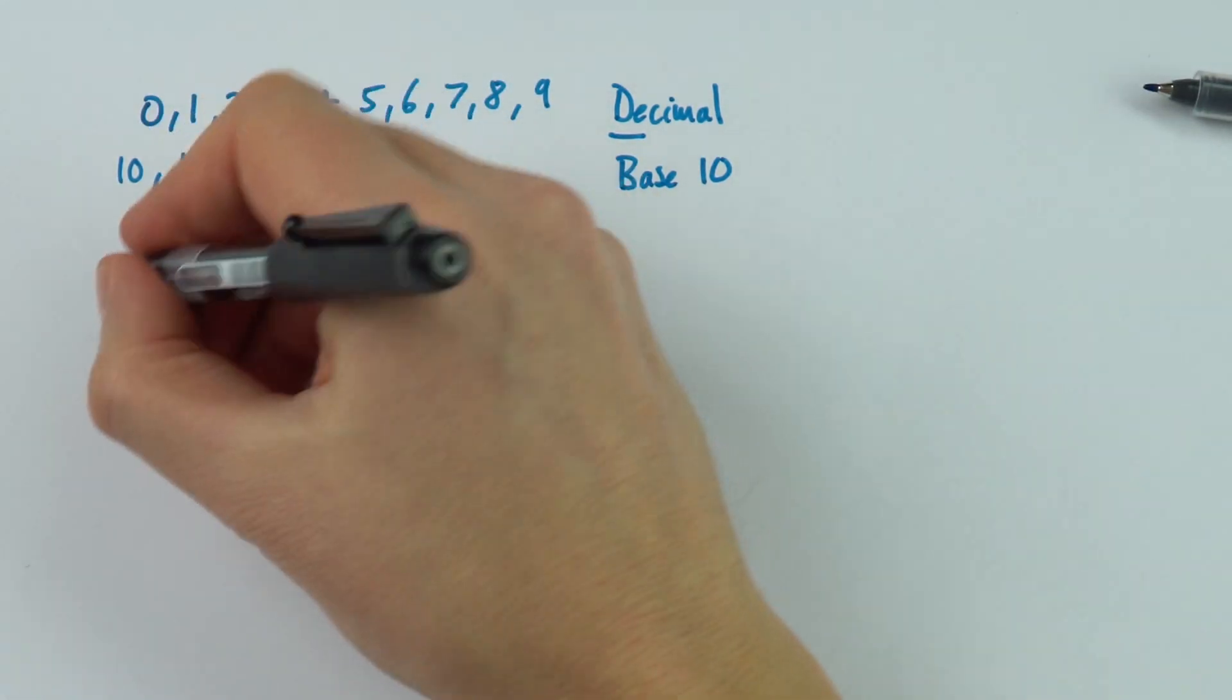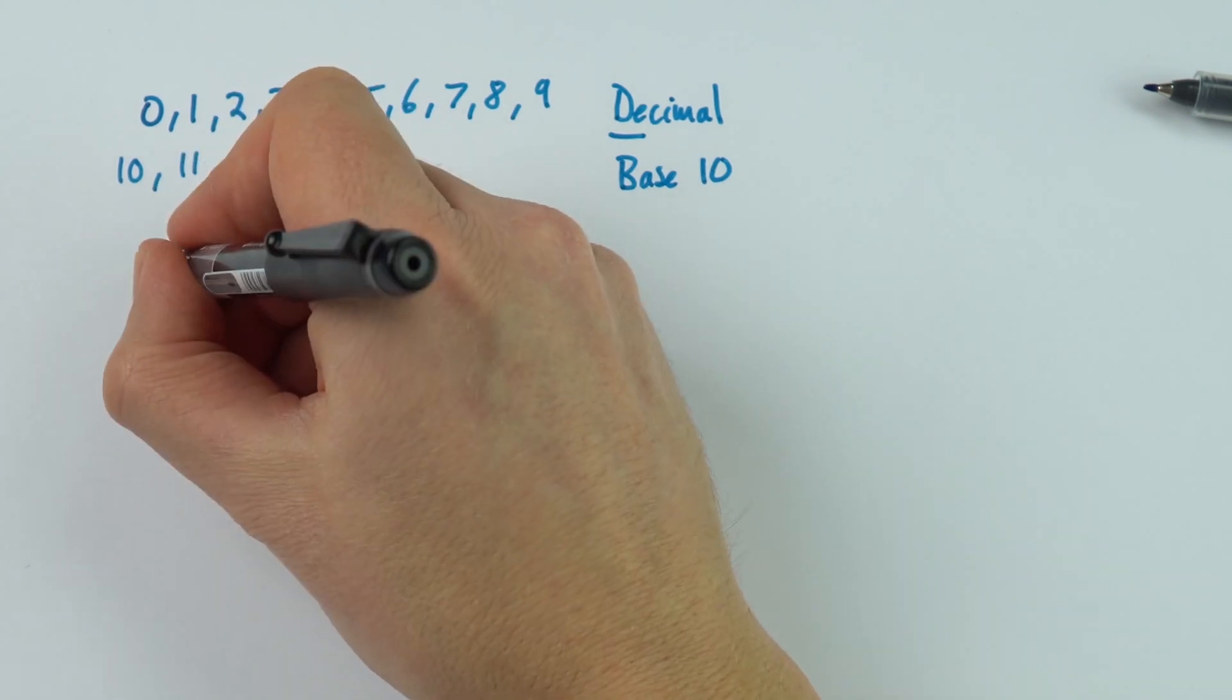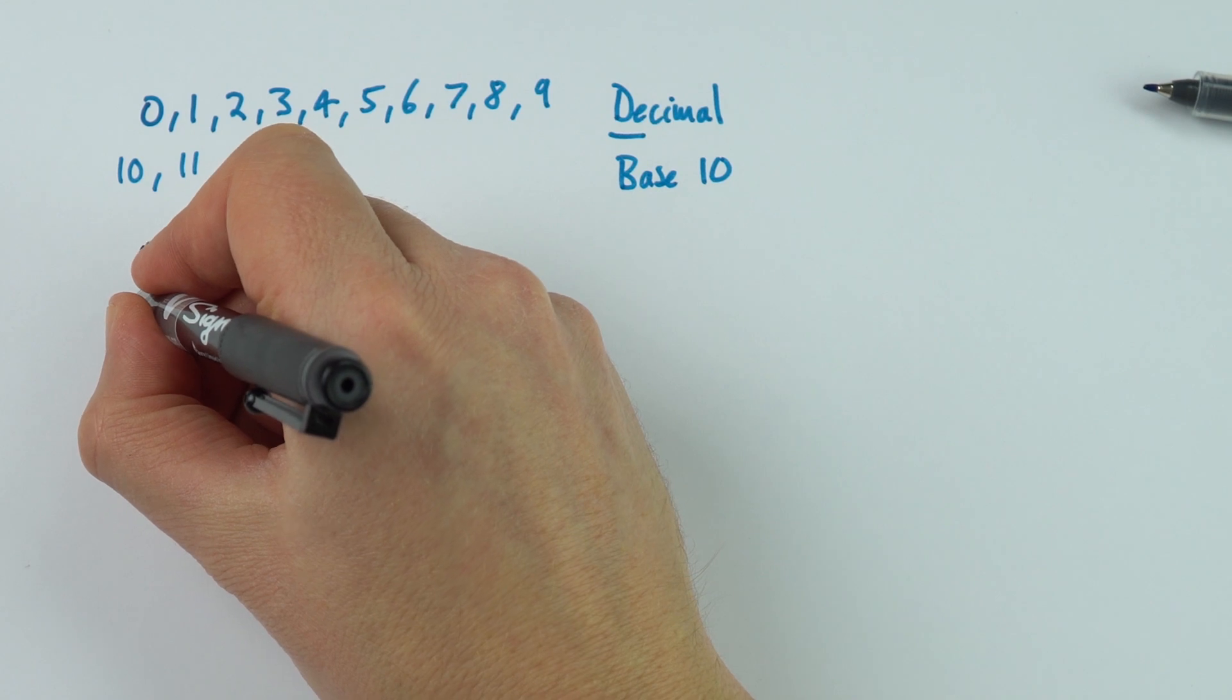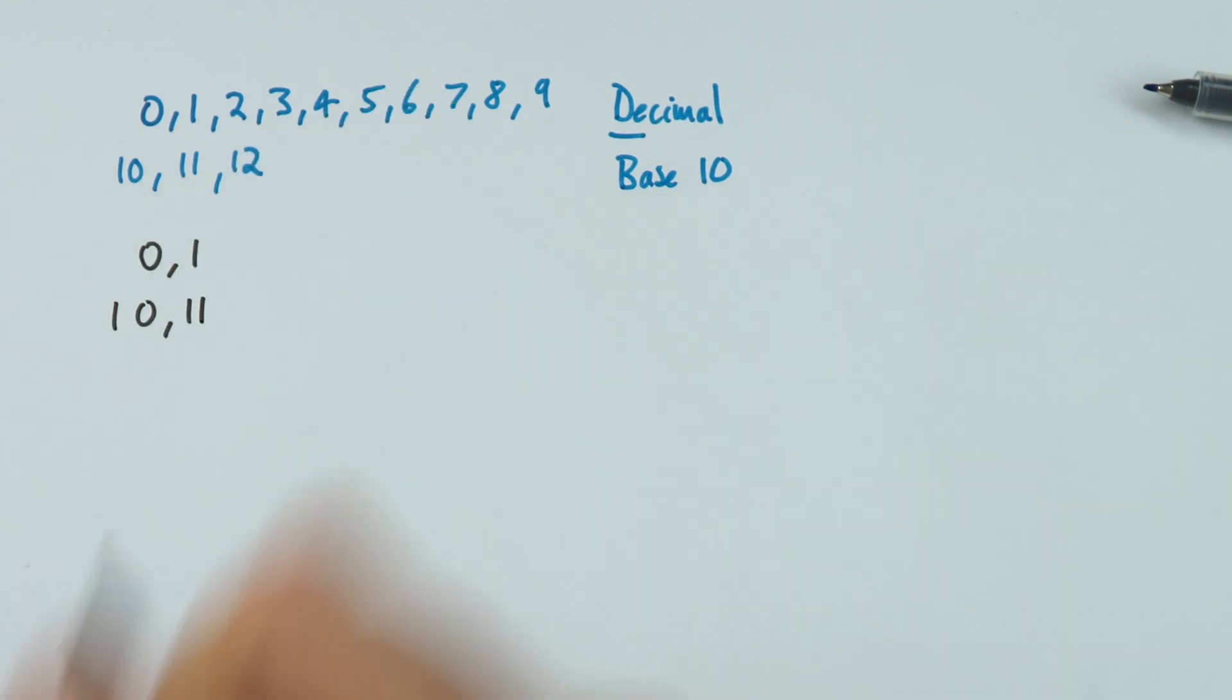But sometimes it's more useful to use just two values, 0 and 1. So we have 10, 11, and so on.